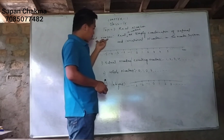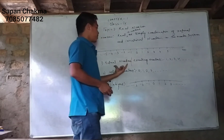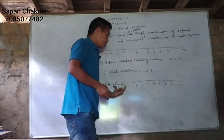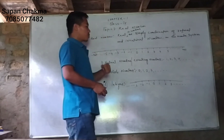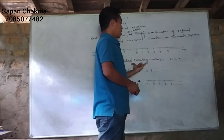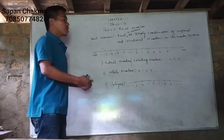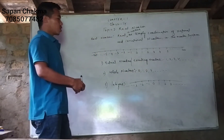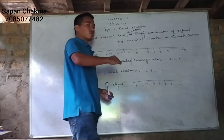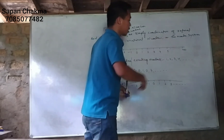The real number includes the natural number and the whole number. Natural means counting number. The natural numbers are 1, 2, 3, 4, 5, 6, 7, 8, 9, 10.